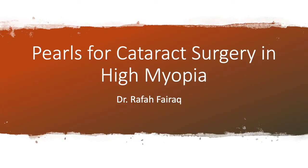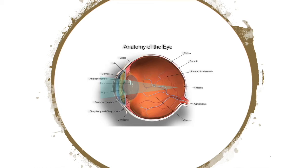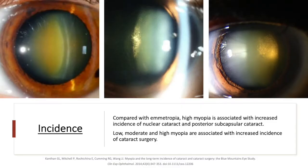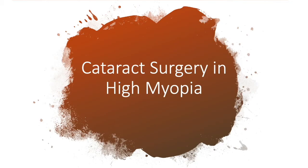Dr. Rafa Fairag will briefly take us through some pearls of cataract surgery in high myopia. Myopia is a condition where the focal point of an eye is located anterior to the fovea, leading to unclear images. Myopia is classified as high when spherical equivalent is minus 6 diopters or more and axial length is 26.5 mm or more, but pathological myopia is when axial length is 32.5 mm or more and spherical equivalent is minus 8 diopters or more. According to the Blue Mountains Eye Study, myopia is associated with increased incidence of nuclear sclerosis and posterior subcapsular cataract, and increased incidence of cataract surgery.